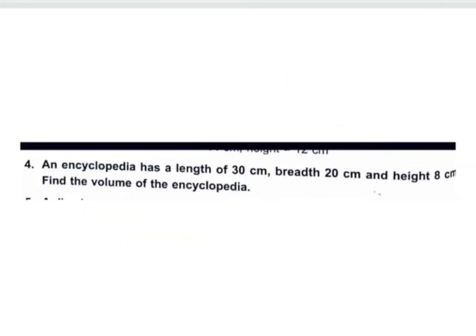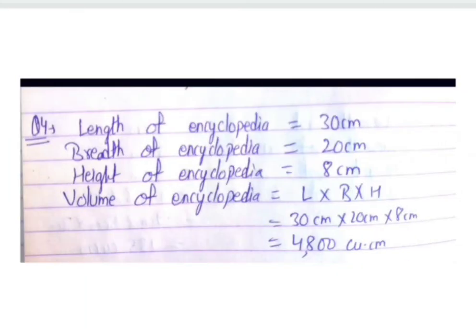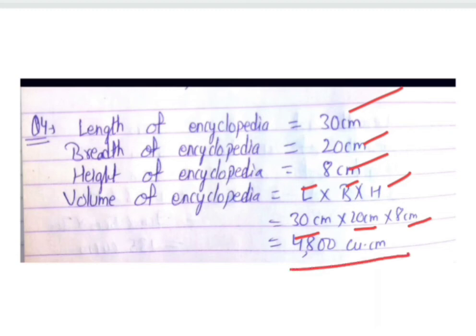Question number four: an encyclopedia has length 30 cm, breadth 20 cm, and height 8 cm. Find the volume. Volume = length × breadth × height = 30 × 20 × 8 = 4800 cubic centimeters.